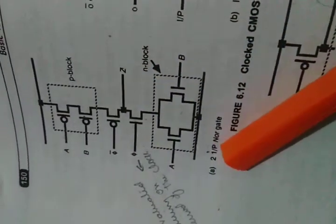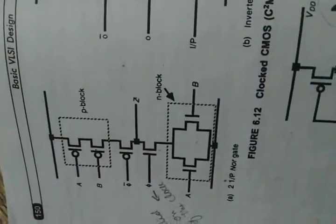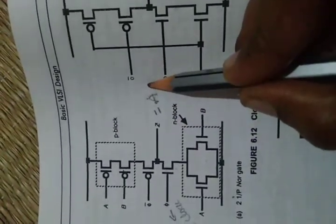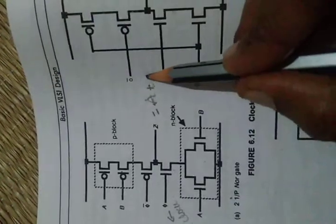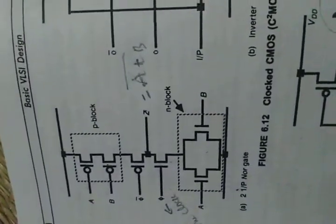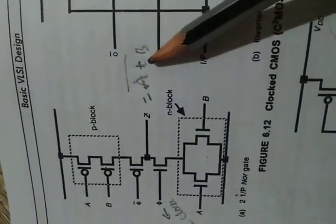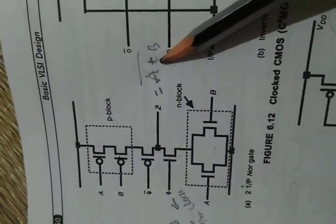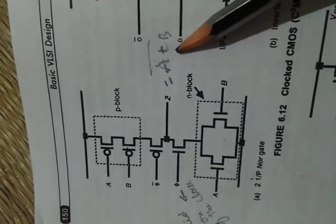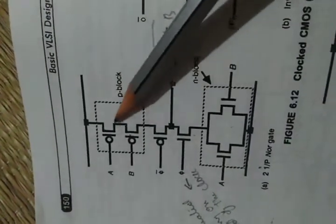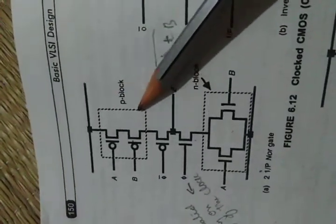Here I am designing a two-input NOR gate. If it is a NOR gate, the expression is A plus B whole bar. Since plus appears in the expression, in the PMOS the transistors should be in series, and NMOS should be in parallel.